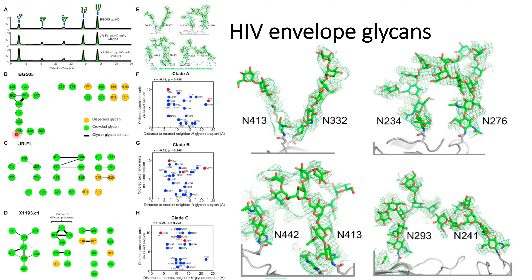Later on, they identified whether the glycans are crowded or dispersed among them, and they also analyzed whether the interactions between the glycans are strong or not. This is shown in figures B, C, and D, which represent the analysis in different parts of the envelope protein of HIV.